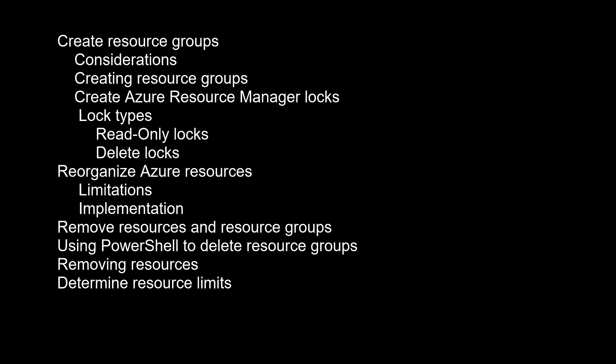Remove resources and resource groups. Use caution when deleting a resource group — deleting a resource group deletes all the resources contained within it, and that resource group might contain resources that resources in other resource groups depend on. Using PowerShell to delete resource groups: to remove a resource group, use Remove-AzResourceGroup. In this example, we are removing the ContosoRG1 resource group from the subscription. The cmdlet prompts you for confirmation and returns no output. You can also delete individual resources within a resource group, such as deleting a virtual network. Instead of deleting, you can move the resource to another resource group.